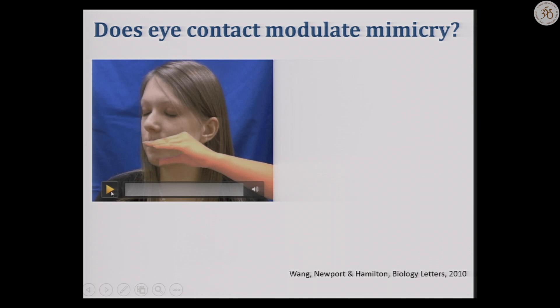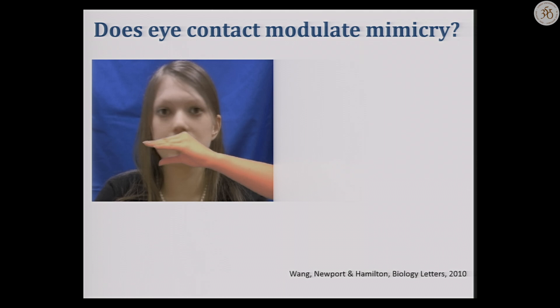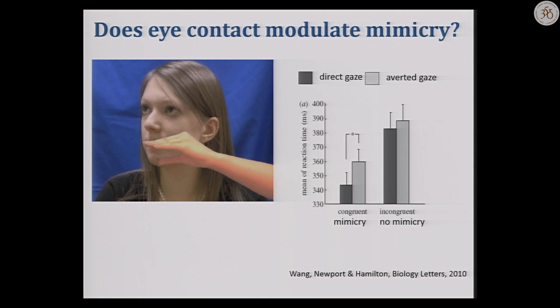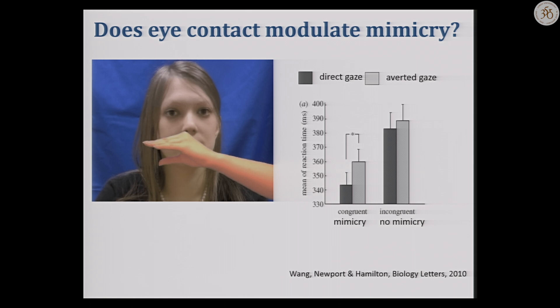We then tested whether this tendency is modulated by social cues — if somebody looks directly at you before making the hand movement, does that change how much you imitate? It does. Participants are faster on the mimicry trials compared to the no-mimicry trials, but they're even faster when they get direct eye contact. If someone looks at you, that makes you faster in your imitation response. We've done follow-ups showing it really matters that the person is looking at you at the time when you make your response.